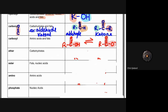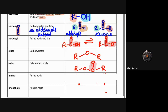The ether functional group is only ever attached to carbohydrates, and it has the functional group of O bound to R on either side — one oxygen connecting two different carbohydrates together. An ester is found with fats and nucleic acids only. Much like an ether, it has that O bound to an R, but it also has a C double-bonded to O, and then another R group — either a fat or nucleic acid on either side.